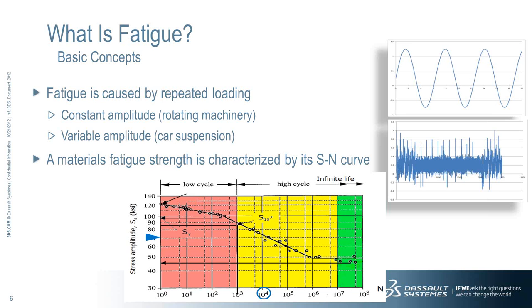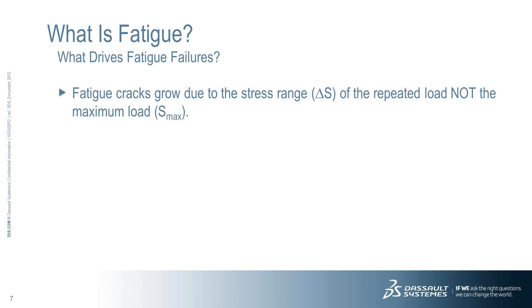In low cycle fatigue, it's the strain rate that dominates. High cycle fatigue means the stress rate dominates. Infinite life means your product is never going to fail. Also worth noting on the SN curve is that in high cycle fatigue, there's quite a bit of scatter, so your results are always going to be statistical in nature — probable failures.